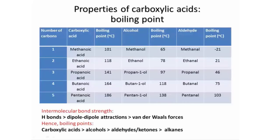Because of this high level of hydrogen bonding, carboxylic acids naturally have high boiling points, significantly higher than alcohols. This gives the general trend: carboxylic acids have higher boiling points than alcohols, which are higher than aldehydes and ketones, which are higher than alkanes, as long as you're comparing molecules with the same number of carbons.